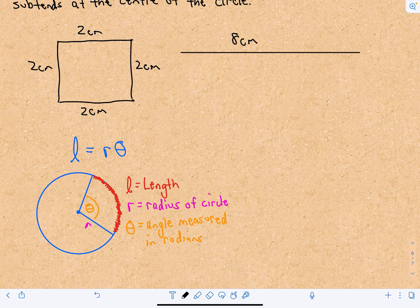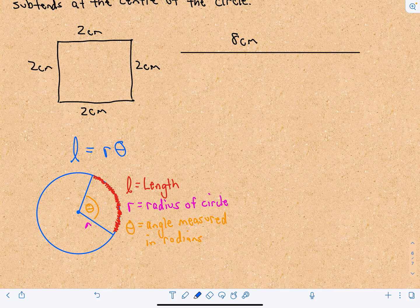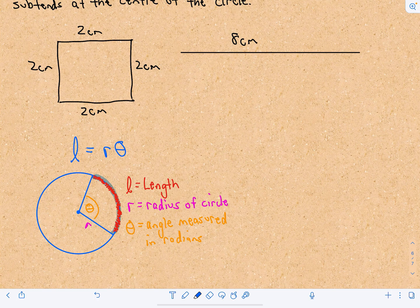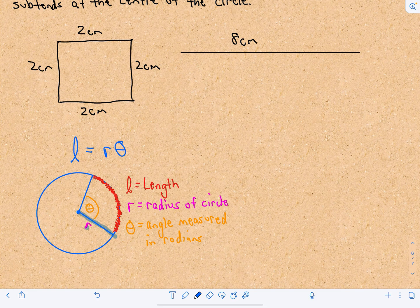So the formula that you need to remember in this case is the following. So here I've got a circle, and if you know a length along the perimeter of the circle and you know the radius of the circle,